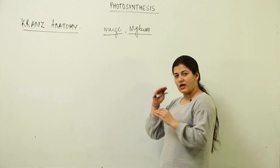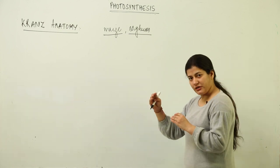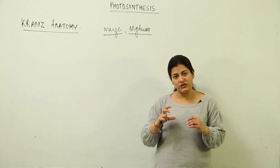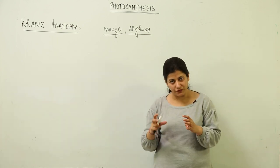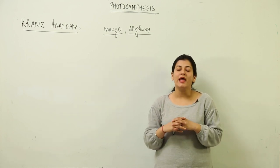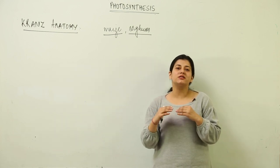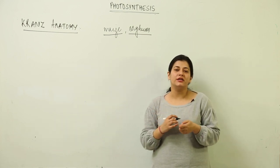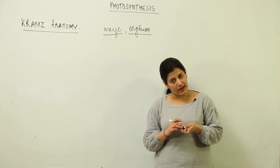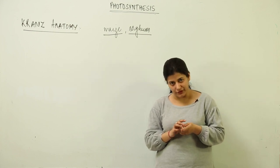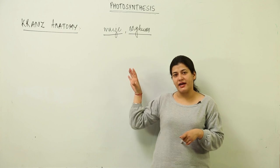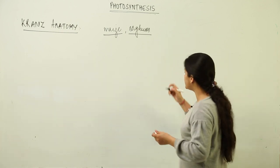If you recall the simple anatomy of a leaf, a leaf possesses an upper epidermis, a lower epidermis, and in between there is mesophyll tissue. The mesophyll is divided into spongy mesophyll and palisade mesophyll.